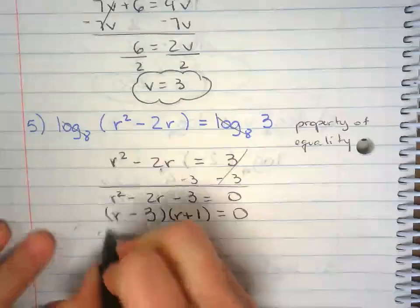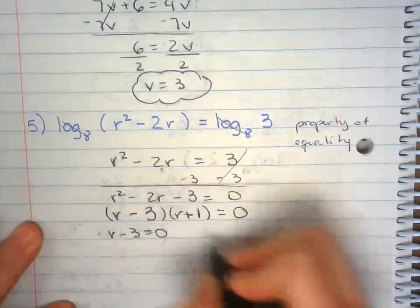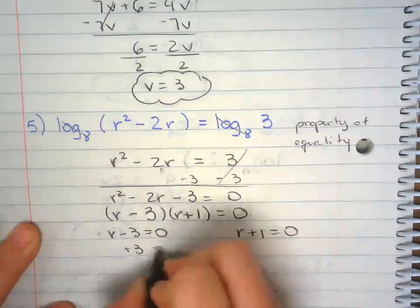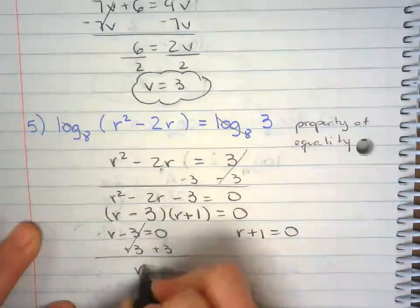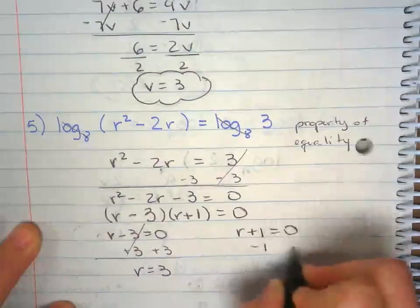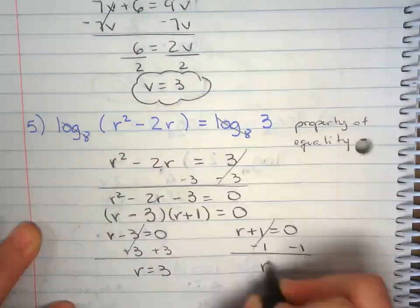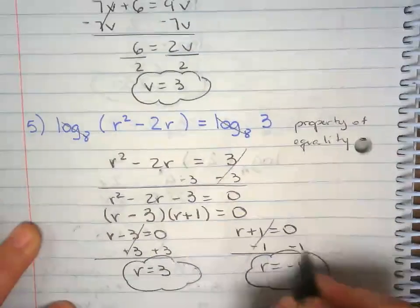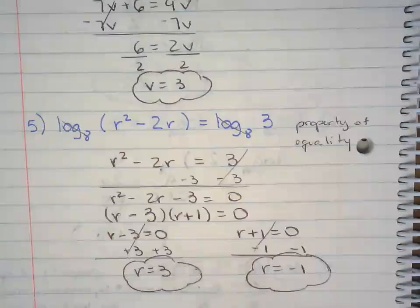Now I set each term equal to 0. Plus 3 to both sides, minus 1 to both sides. So this one has two answers: r equals 3 and r equals negative 1.